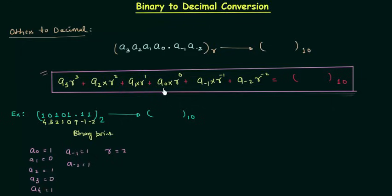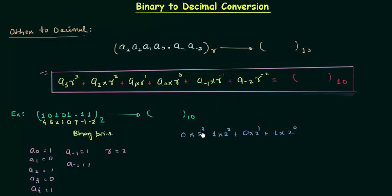Now you have everything to find the decimal equivalent of this binary number. We have to multiply a0 by r raised to power 0: a0 is 1 and r raised to power 0 is 2 raised to power 0. In the same way: 0 multiplied by 2 raised to power 1, plus 1 multiplied by 2 raised to power 2, plus 0 multiplied by 2 raised to power 3, plus 1 multiplied by 2 raised to power 4. For the fractional part, a-1 is 1, so 1 multiplied by 2 raised to power minus 1, and a-2 is 1, so 1 multiplied by 2 raised to power minus 2.